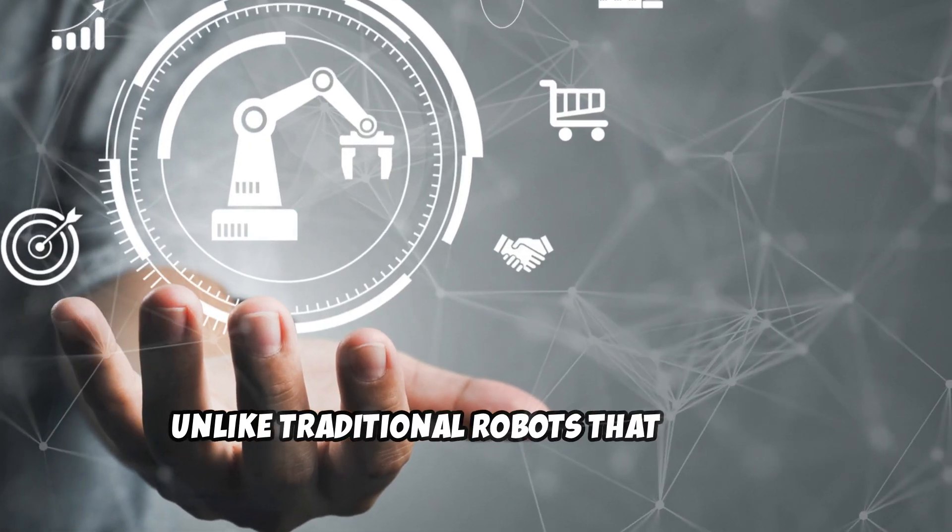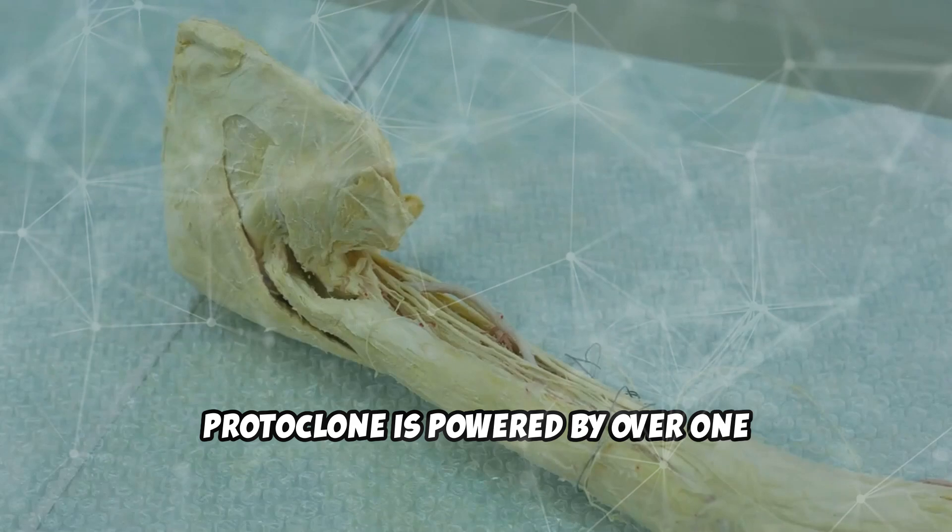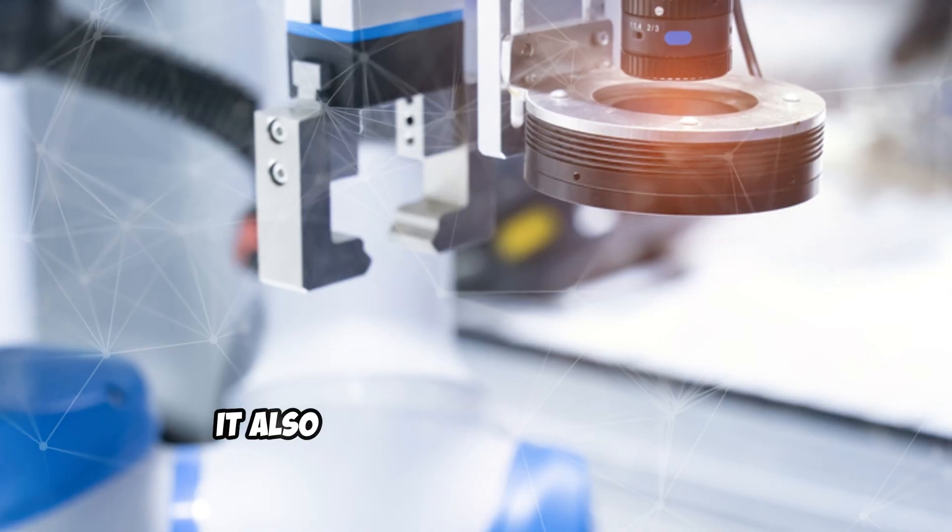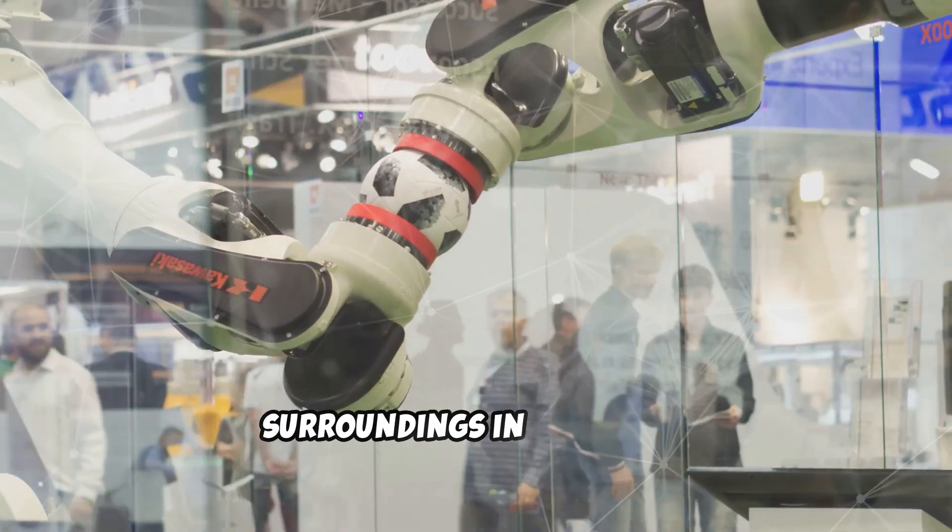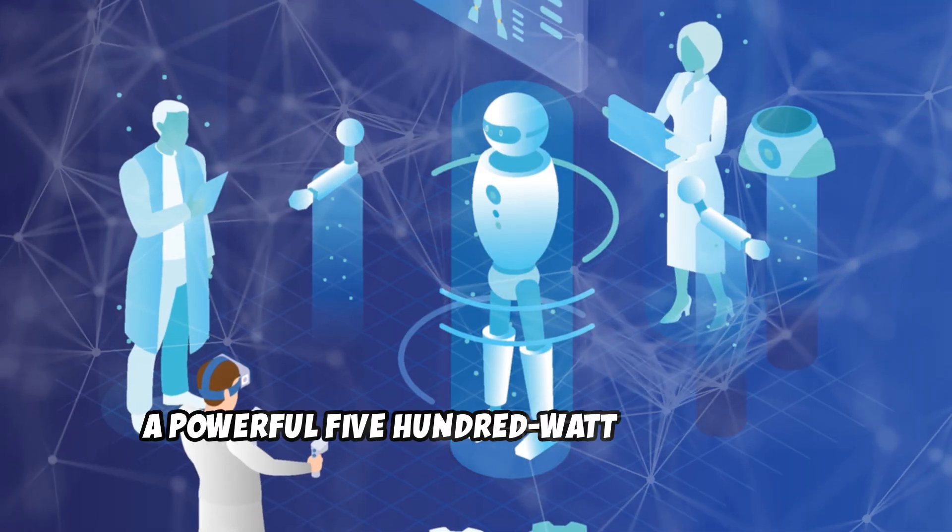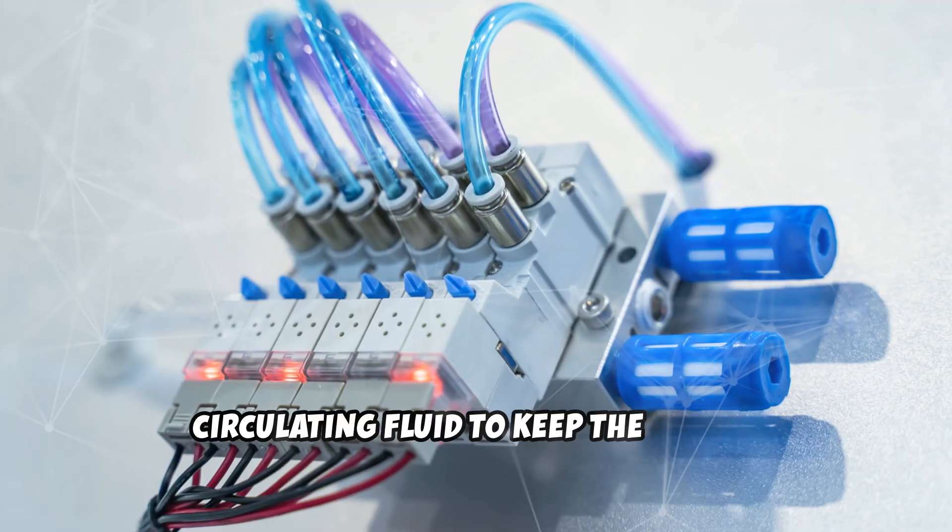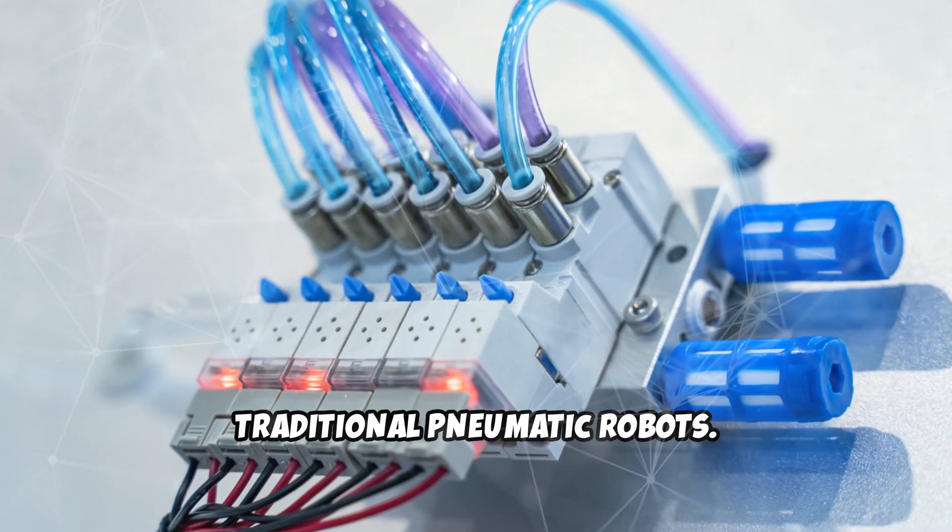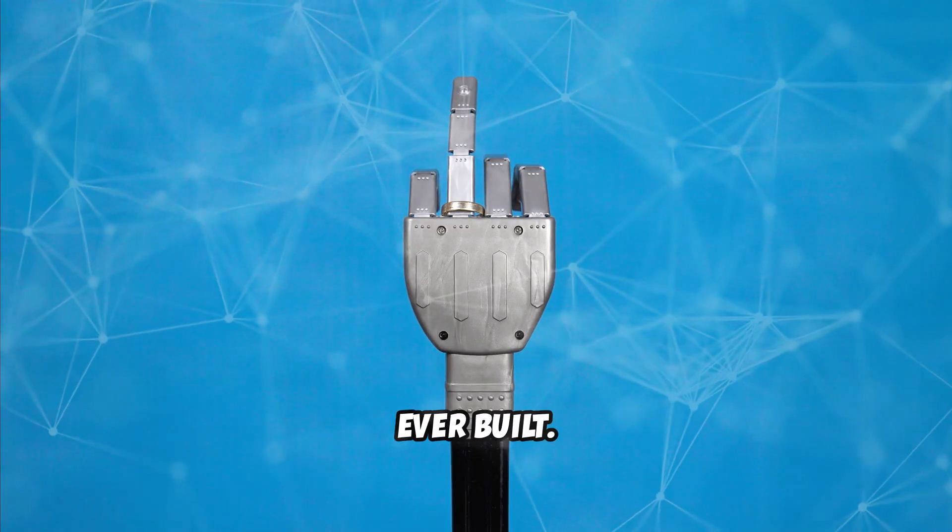Unlike traditional robots that rely on motors and rigid structures, Protoclone is powered by over 1,000 artificial muscle fibers. Just like a human, it also has 500 sensors, allowing it to process and respond to its surroundings in real time. A powerful 500-watt water pump acts like a human heart, circulating fluid to keep the system running, quieter and more efficient than traditional pneumatic robots. And with over 200 degrees of movement, it's one of the most flexible humanoids ever built.